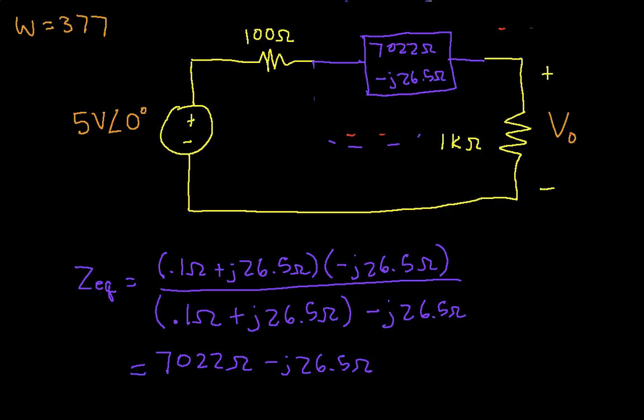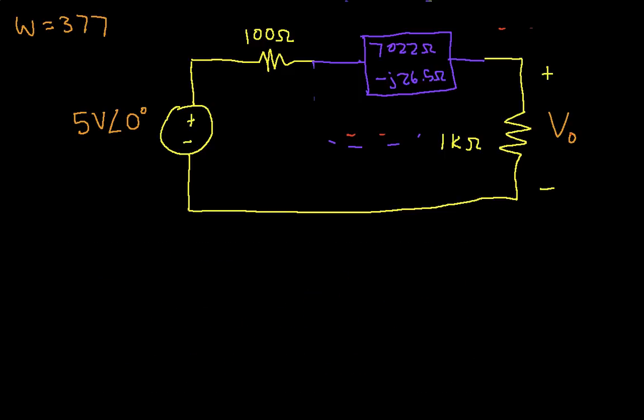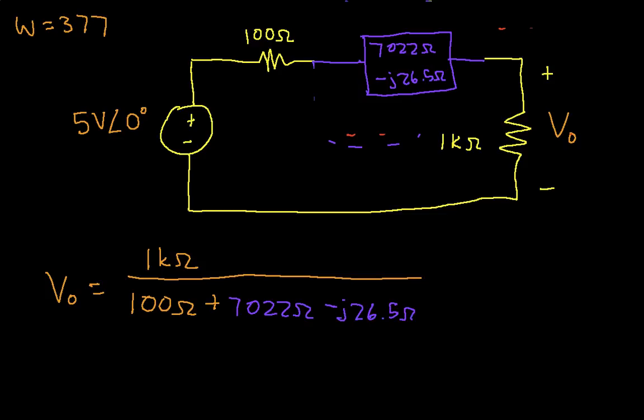Now we can use a voltage divider to get the desired output voltage Vout. Vout is equal to 1k ohm, that's the resistance it's across, over 100 ohms plus 7022 ohms minus j26.5 ohms plus 1k ohm, times 5 volts at an angle of 0.